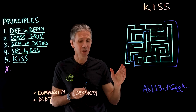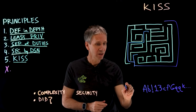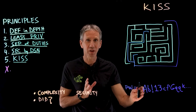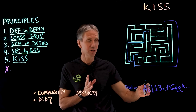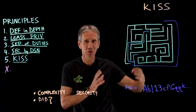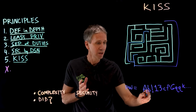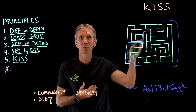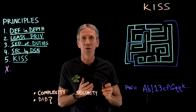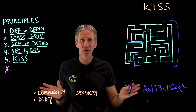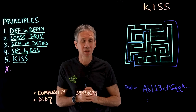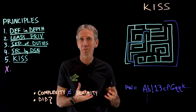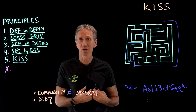Here's a real example: password rules. Security creates complex requirements — start with an uppercase, followed by a lowercase, then a special character, then numbers, mixed cases throughout, really long, a different one on every system, changed frequently. That's a complex maze. The user's response is to find one password, write it down, and set all their systems to the same thing — which is not what we were after. Complexity is the enemy of security. We want the system just complex enough to keep the bad guys out, but not so complex that it's hard for the good guys.